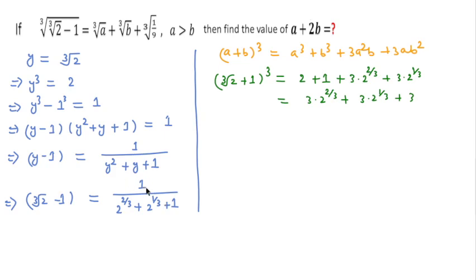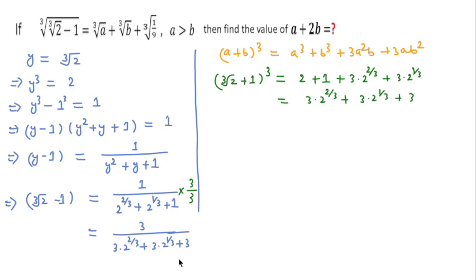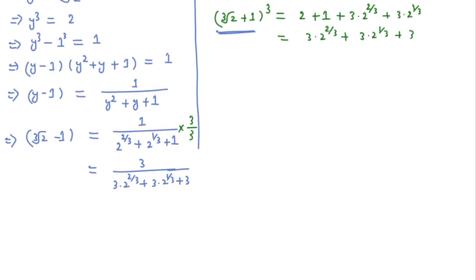If we multiply numerator and denominator by 3, this becomes 3 over 3, times (2^(2/3) plus 3 times 2^(1/3) plus 3). So in place of this expression, we can write 1/3 times (cube root of 2 minus 1).